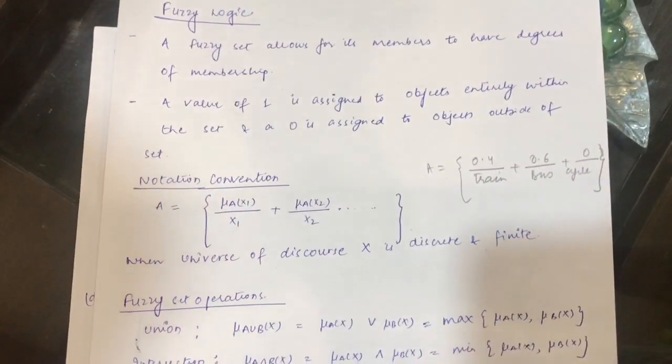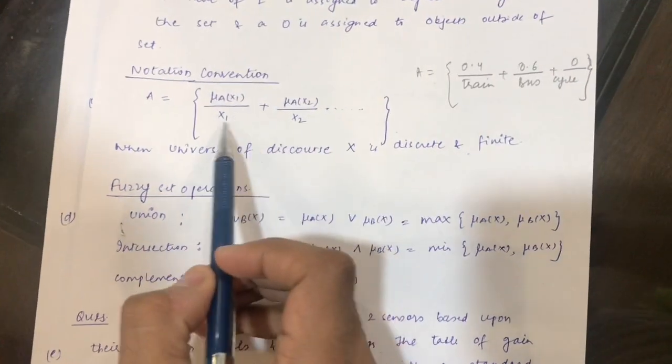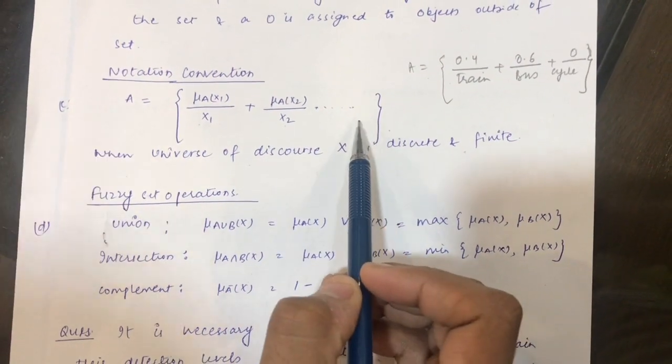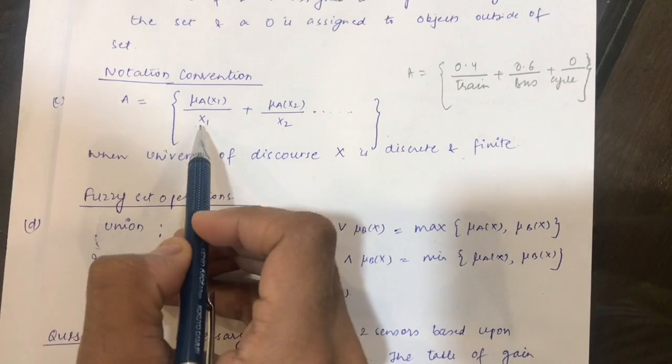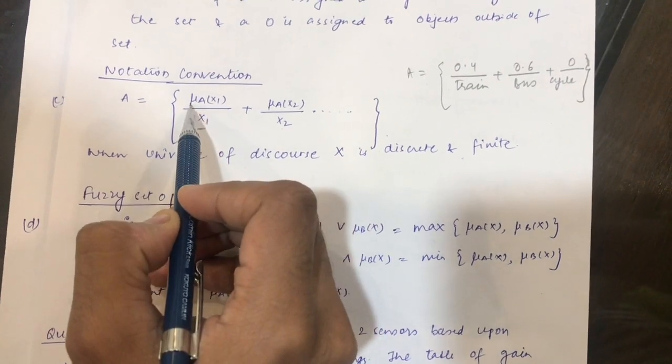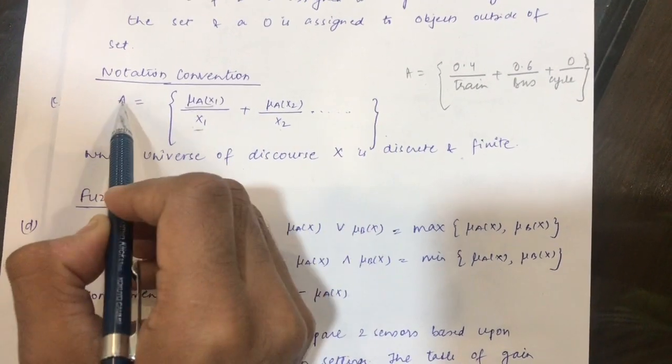So how do we represent a fuzzy set? This is the notation convention: x1, x2, all these belong to the universe of discourse X. How do we read this? x1 has a degree of membership μA(x1) associated with set A.